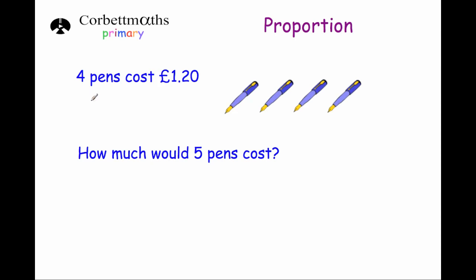Our first question: four pens cost £1.20. How much would five pens cost? Well, in a question like this it can be very useful to find the price of one item — one pen. To do that, you divide the total price £1.20 by how many pens there are, which is four.